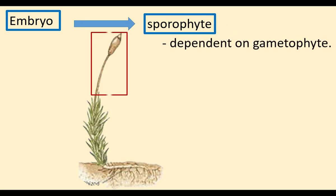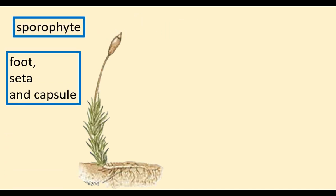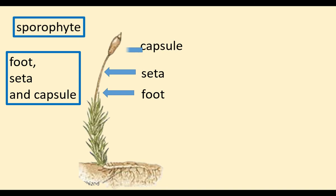The sporophytic plant is also diploid. The sporophyte depends on the gametophyte, remaining attached to it. The sporophyte has three parts: foot, seta, and capsule. The basal part is the foot, by which it is attached to the gametophyte and obtains nutrients and water. The next part is the seta, and the top part is the capsule.